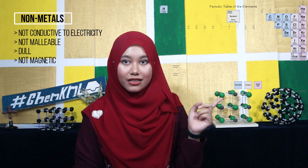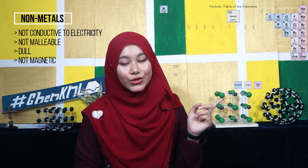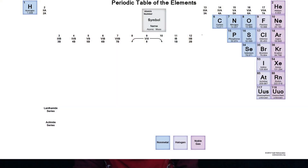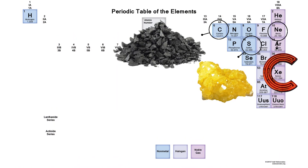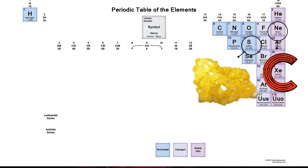In contrast, non-metals found on the right side of the periodic table are typically not conductive, not malleable, dull and also not magnetic. Carbon, sulfur and neon are examples of non-metals.